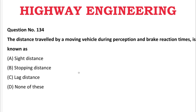Next question: The distance travelled by the moving vehicle during the perception and brake reaction time is known as — A: sight distance, B: stopping distance, C: lag distance, D: none of the above. The correct answer is C, lag distance.